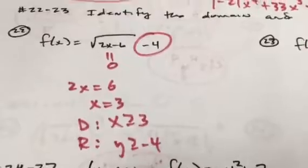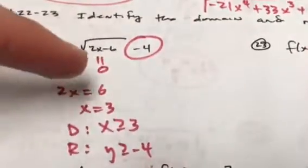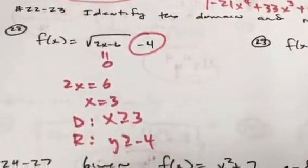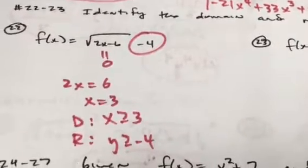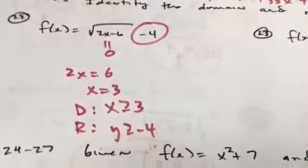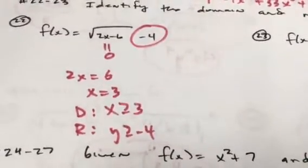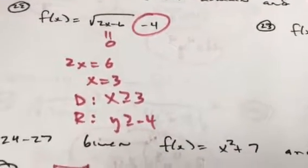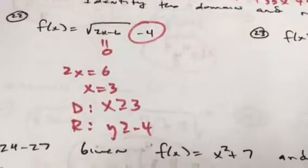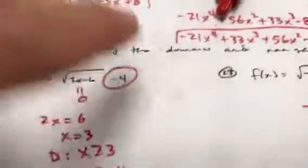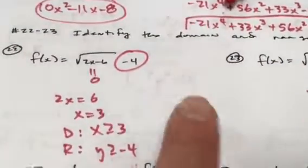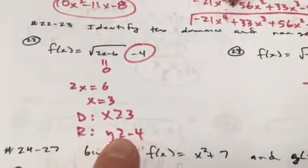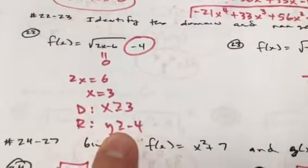Identify the domain and range: the smallest number you can have inside a square root is 0. Set 2x − 6 = 0 and get x = 3. You want that to be 0 or bigger, so values of 3 or bigger give an okay answer — that's why the domain is x ≥ 3. As you put higher values of x in, the whole number gets bigger, so negative 4 is the smallest value you'll get, making the range y ≥ −4.